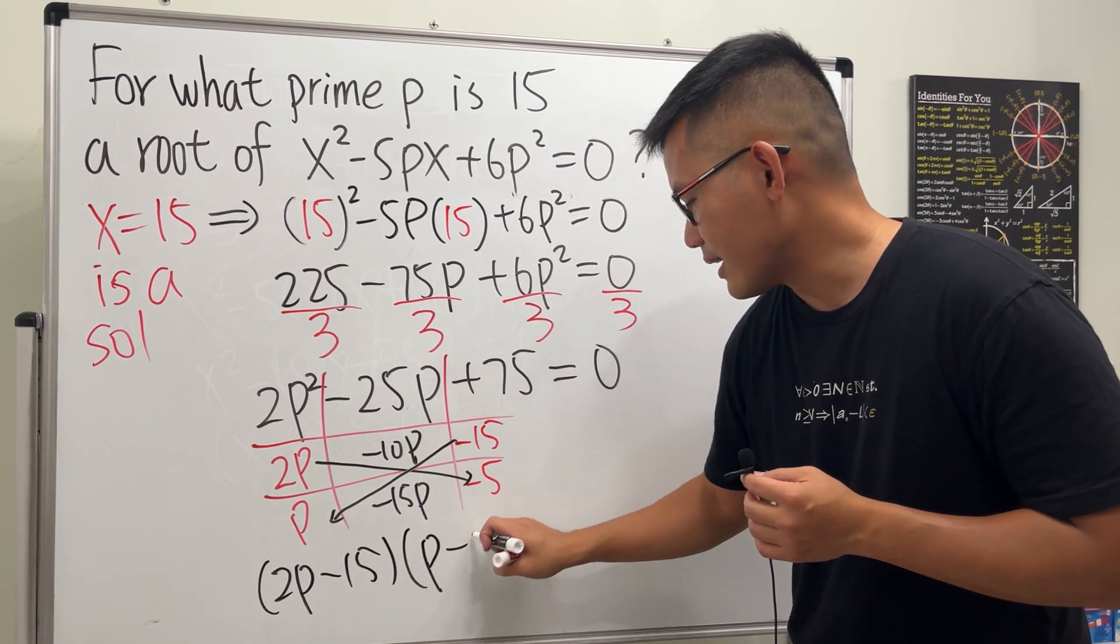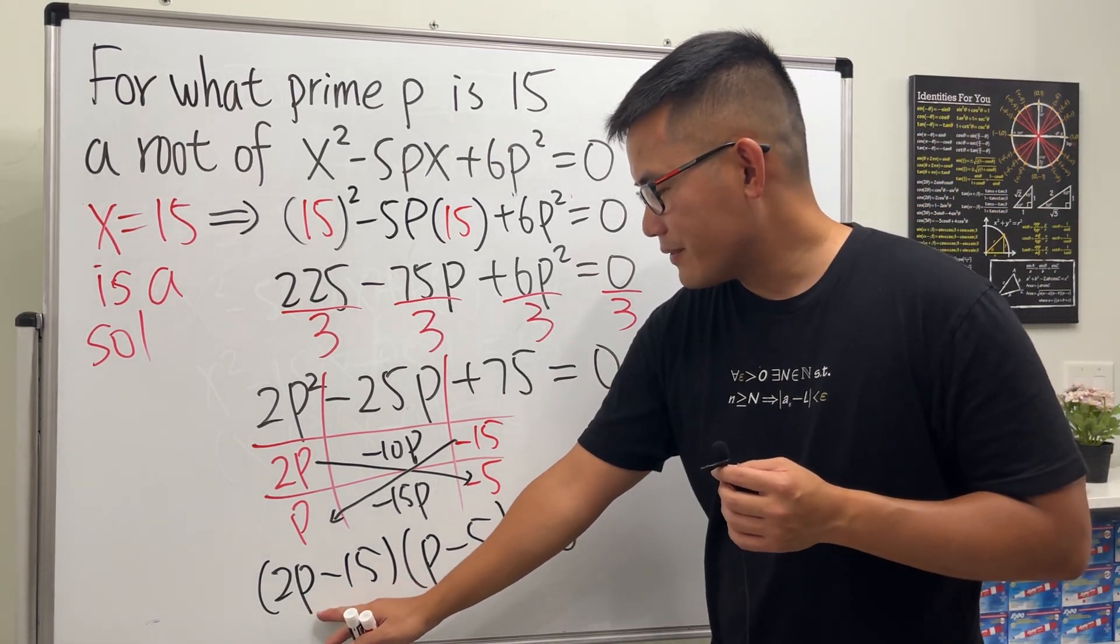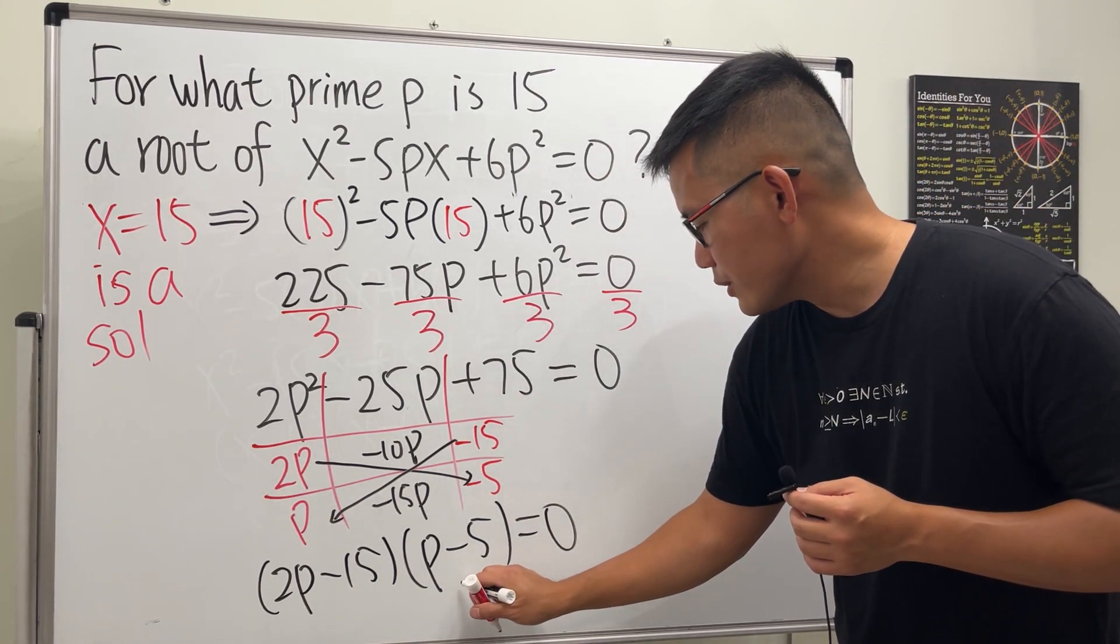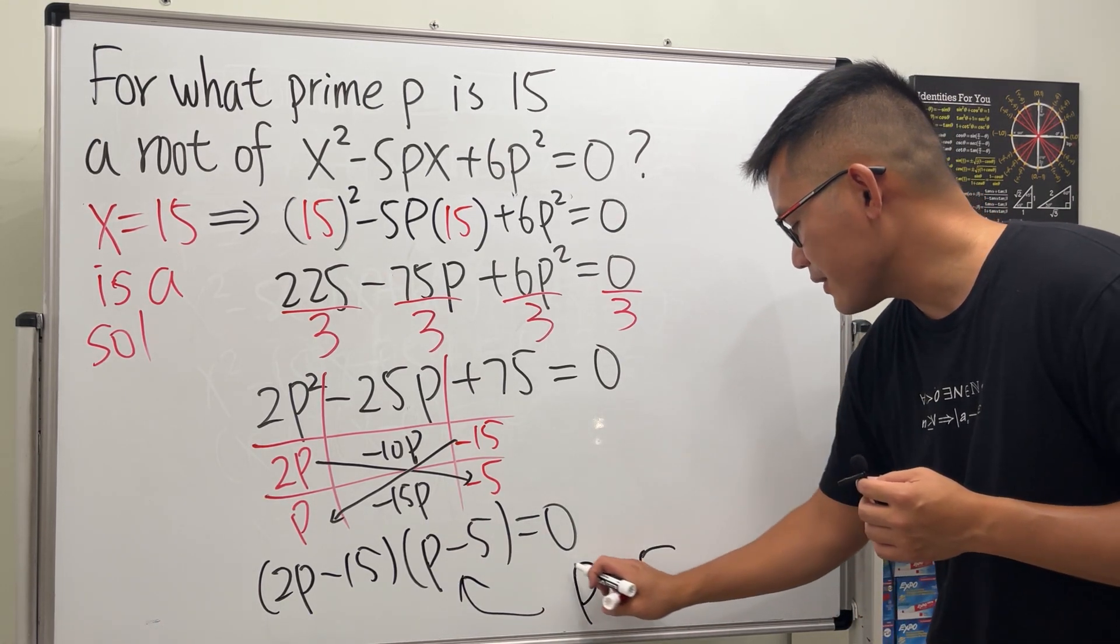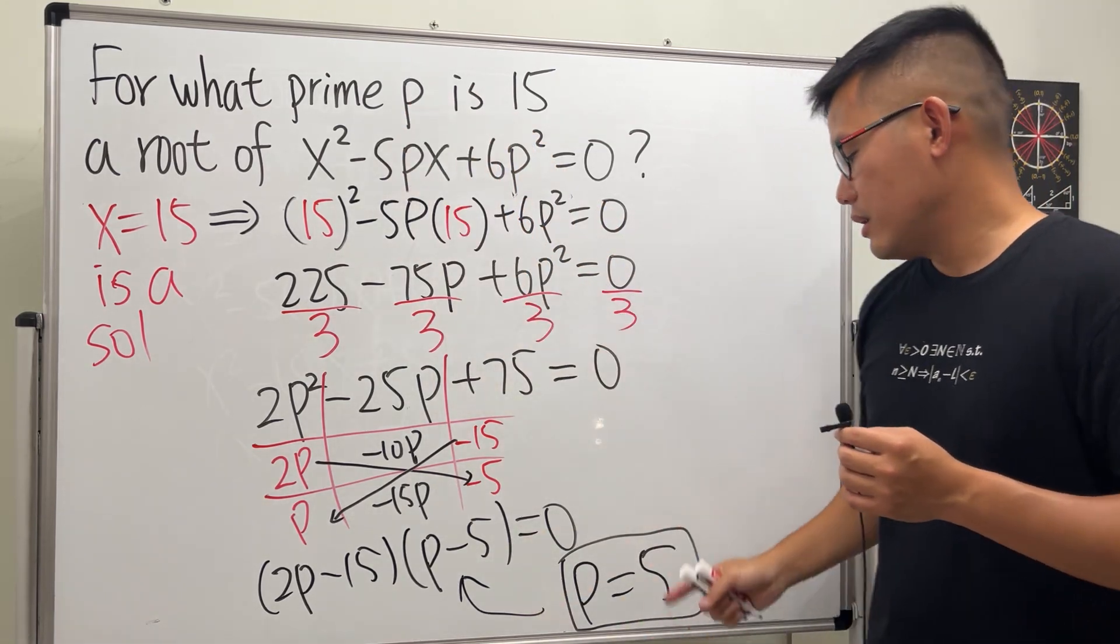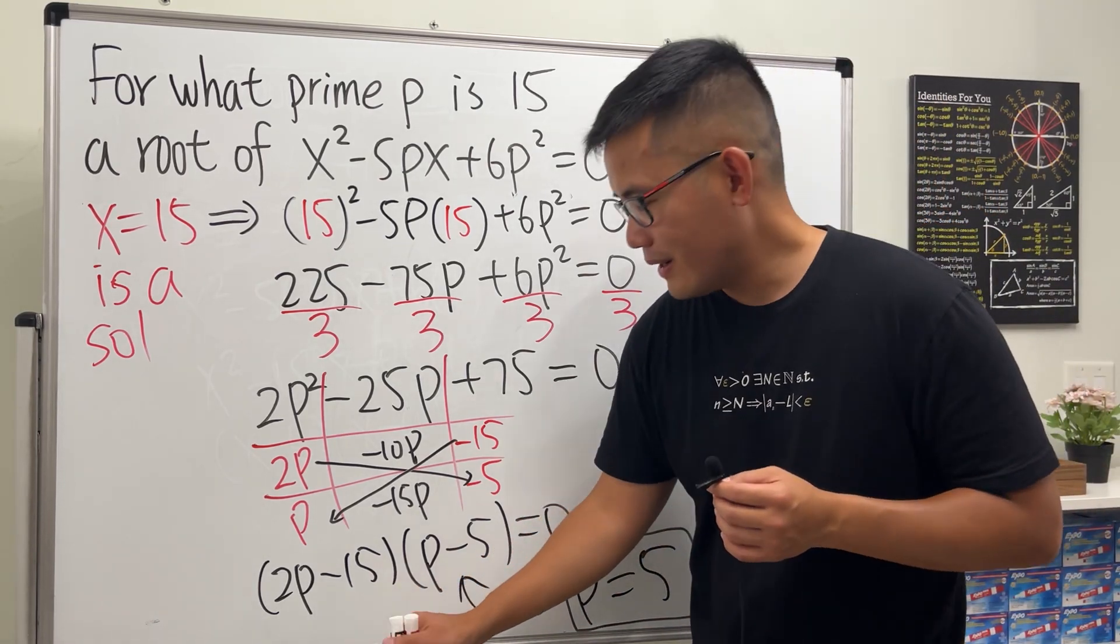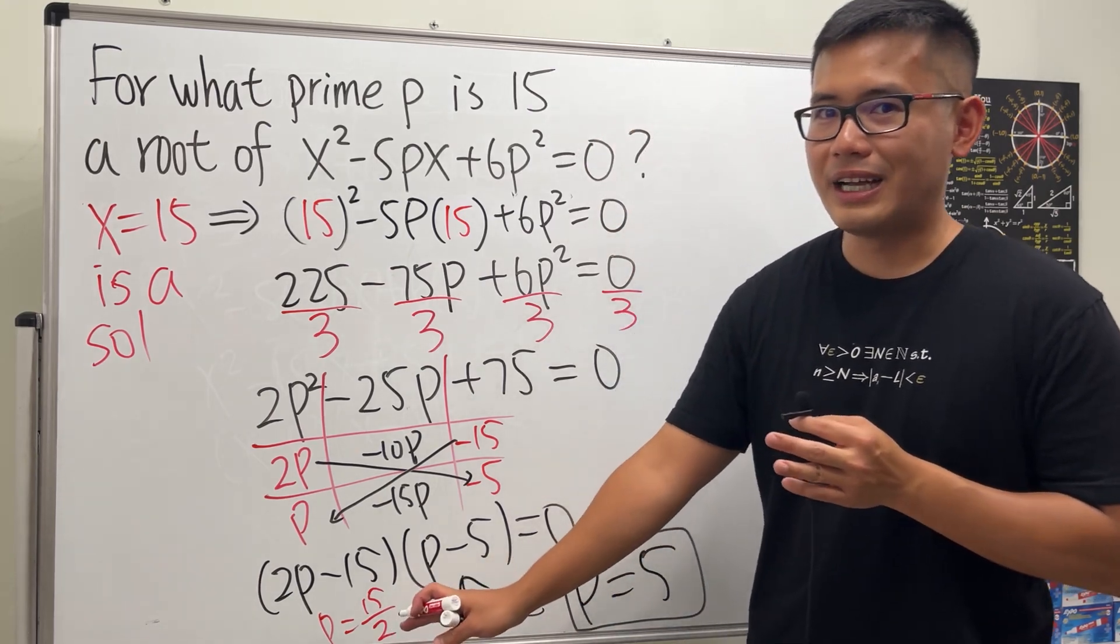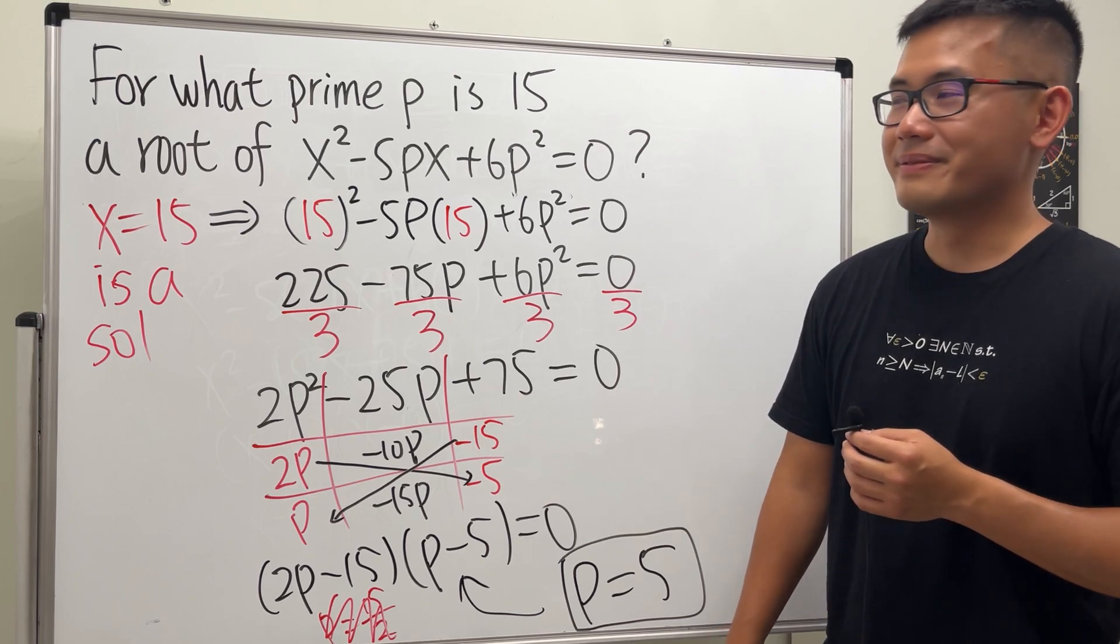So we are getting (2P - 15)(P - 5) = 0. So that means this equals zero or that equals zero. In fact we just need to worry about this part. So P = 5 is the only answer because the question is asking for prime number P. 5 is prime and it works. From here we get P = 15/2, but this is not even a whole number so it's not prime for sure.